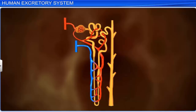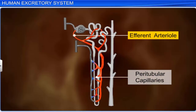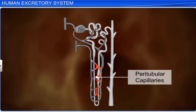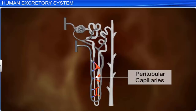Each nephron also has a fine network of capillaries called peritubular capillaries, which is formed from the efferent arteriole leaving the glomerulus. A minute vessel from this network of capillaries forms a U-shaped structure called the vasa recta, which lies parallel to the loop of Henle. They are greatly reduced or absent in cortical nephrons. The capillaries of many such efferent arterioles unite to form the renal vein, which joins the inferior vena cava.